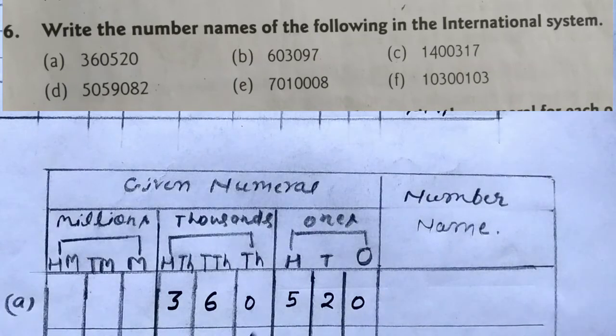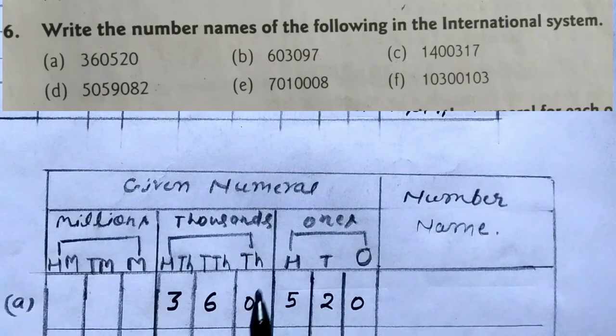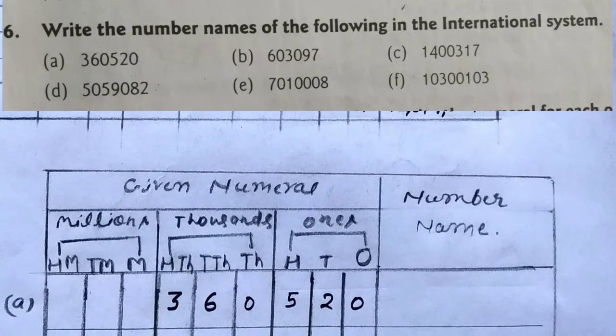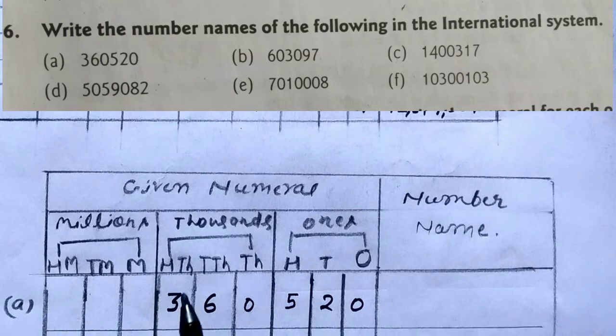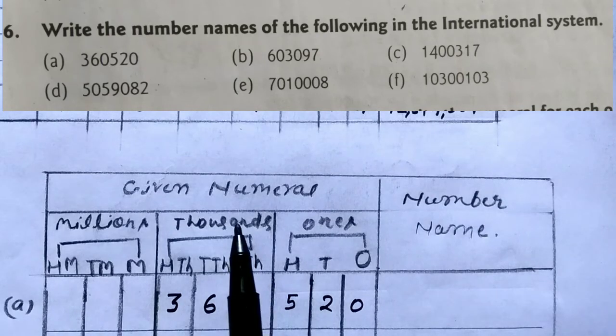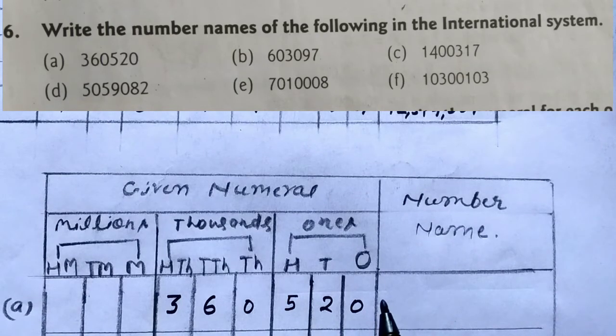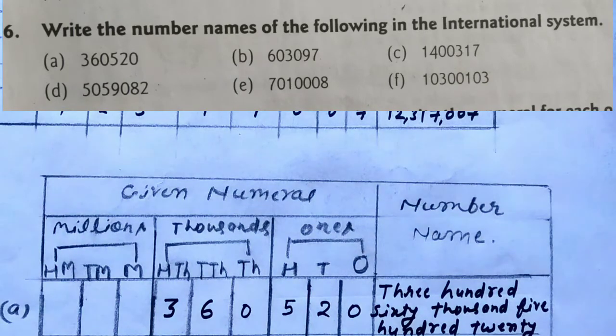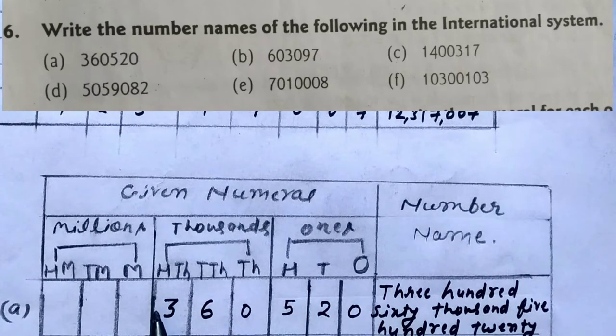So I have arranged the number in place value chart. There are 6 digits so I place them: 360,520. So in thousands period what is written here? 360. I will write here 360 thousands and 520. In this way we can name the number. So let's write. So in thousands period it is written here 360.